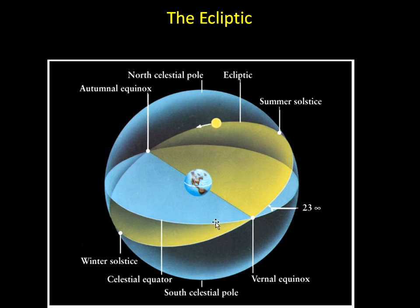There are two locations where the ecliptic crosses the celestial equator — these are the two equinoxes. This is where the sun is located on the first day of spring and the first day of autumn. And then there are two other locations where the sun is located on the longest day of the year, the summer solstice, and the shortest day of the year, the winter solstice.